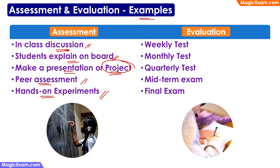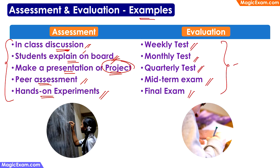Now let us look at evaluation. Evaluation is very simple — things like weekly tests, monthly tests, quarterly tests, midterm exams, and final exams. This was the traditional way of testing students at different intervals. Whereas the current process is assessment, which happens throughout the year through not just tests but all these other activities such as discussions, explanations, projects, and experiments. So these are the examples of assessment and evaluation.